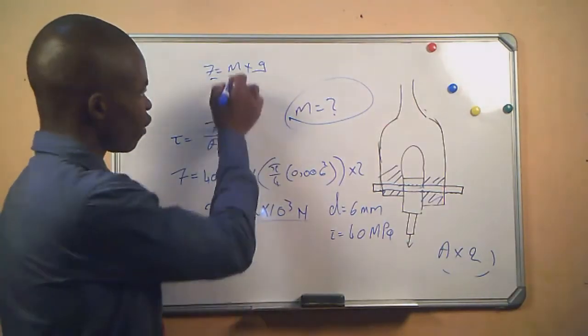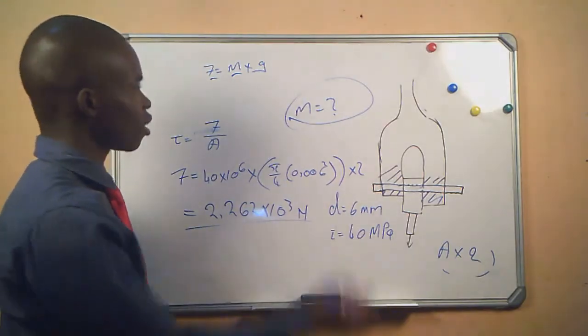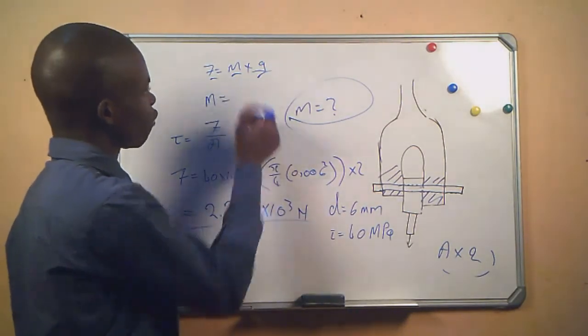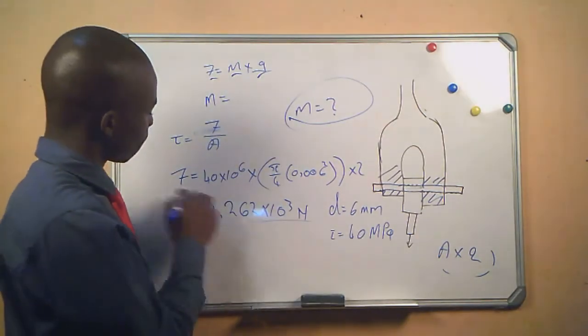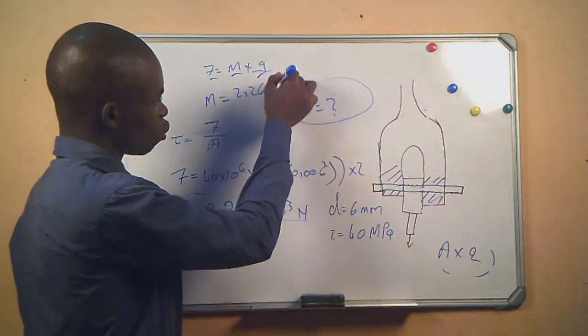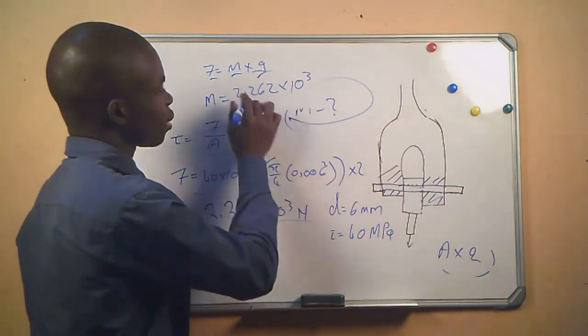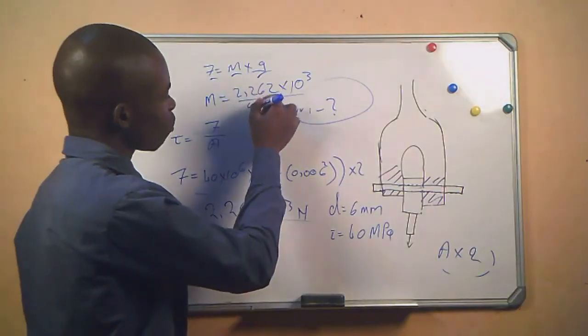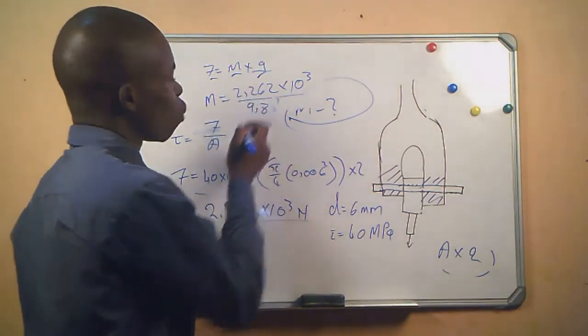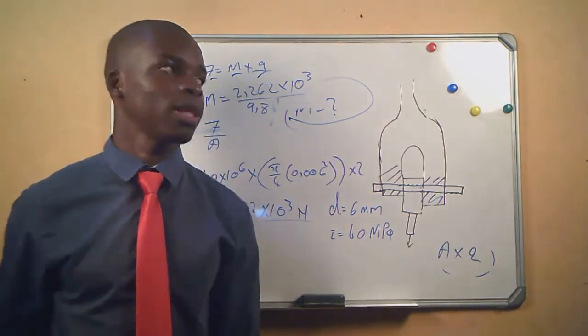So we make m the subject of the formula. What is our f? F is 2.262 times 10 to the power 3 divided by 9.8. We know that the gravitational acceleration is always 9.8, it doesn't change, it's a constant.